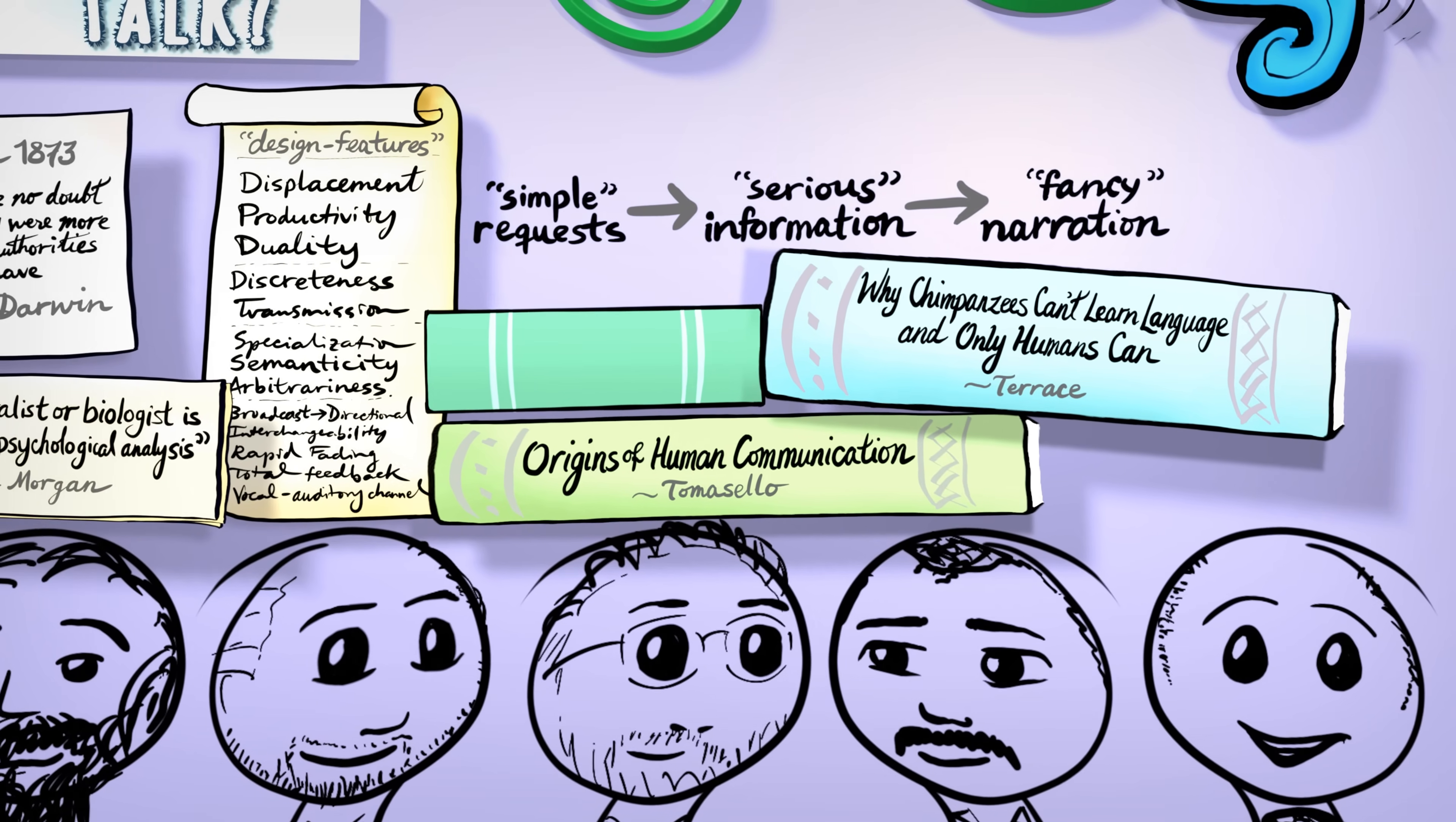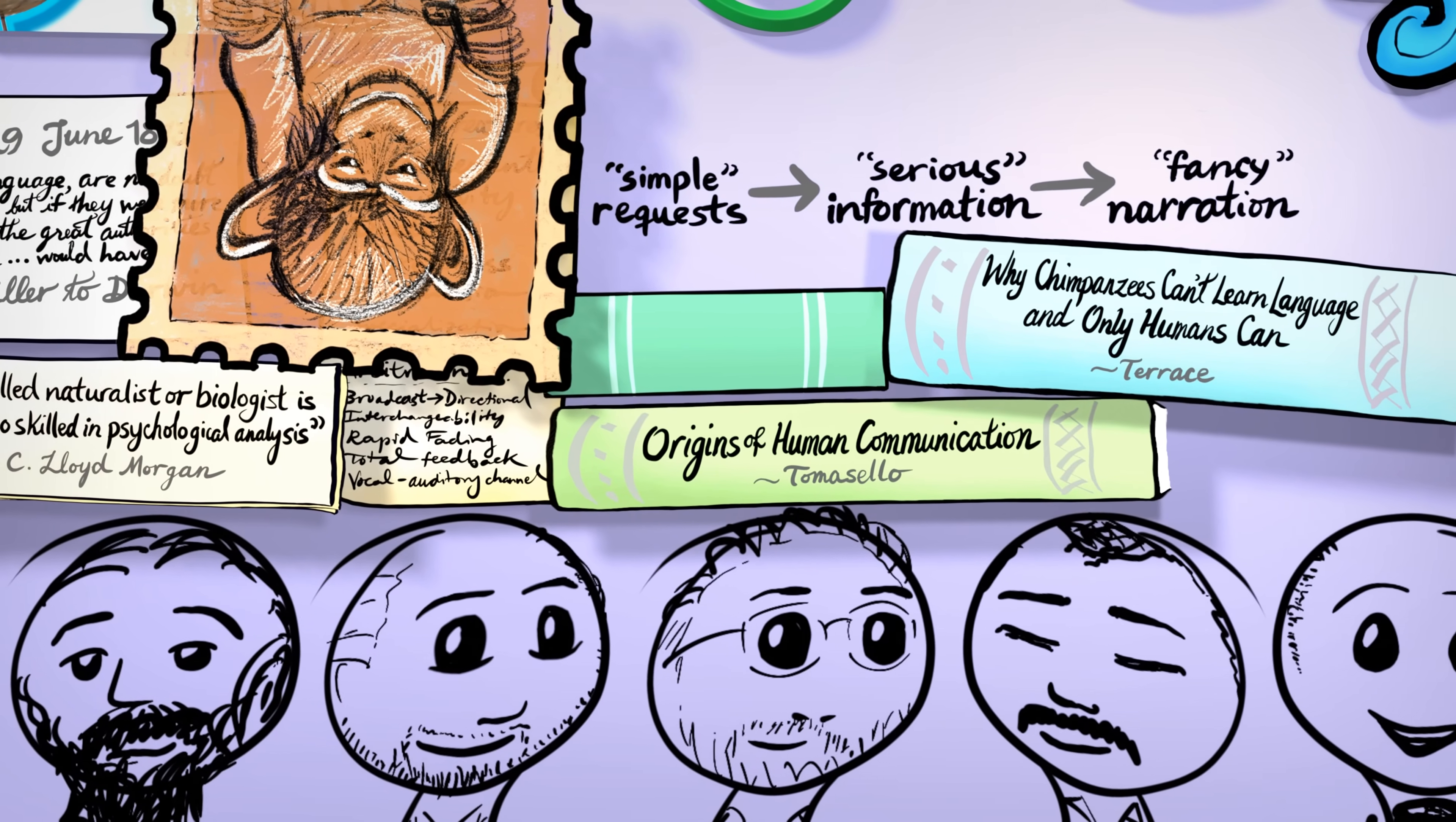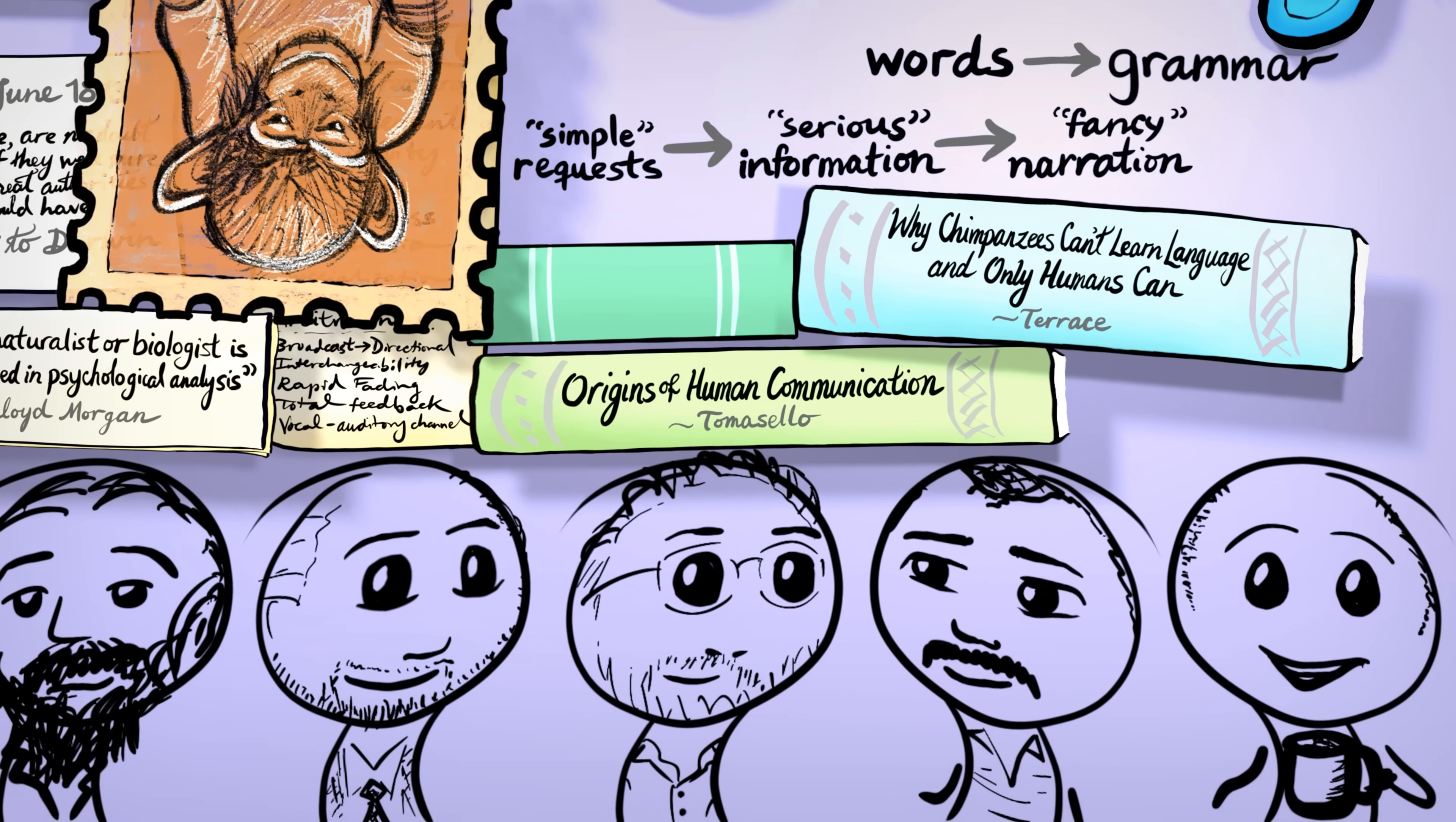The other, well, remember Nim Chimpsky's debunker? He dangles out an origins argument of his own that language follows a need for calories, foraging, and social bonds, and therefore a need for declaratives. To fit that world, human words developed before human grammar.